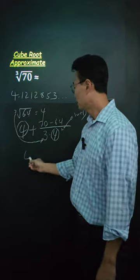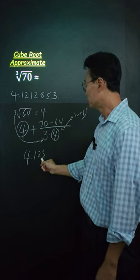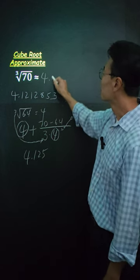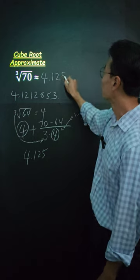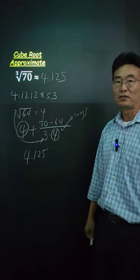Then, if you work this out, you get 4.125, so the approximation of cube root of 70 will be 4.125 if you were to use no calculator.